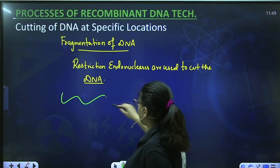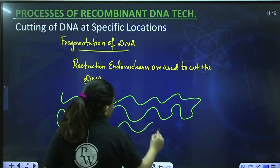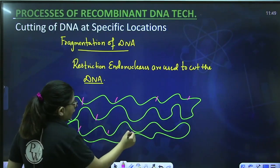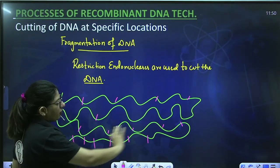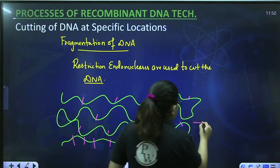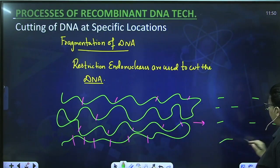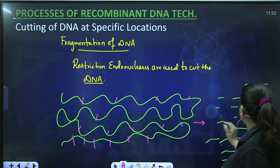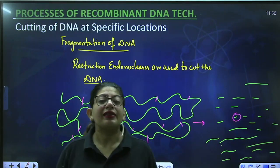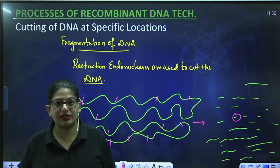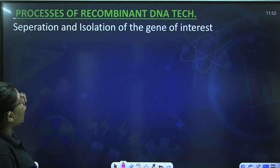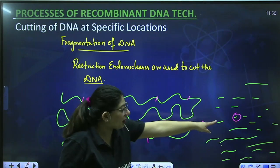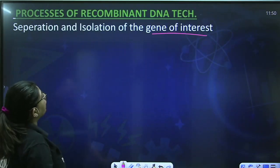For example, this is your entire genomic DNA. You add a restriction enzyme and that enzyme cuts at specific places. The entire DNA has been converted into small pieces of various lengths. Now out of these pieces, imagine this is the piece of DNA you require — the gene that secretes insulin. The next step is how to isolate this gene of interest.